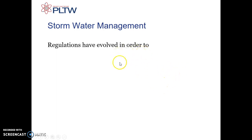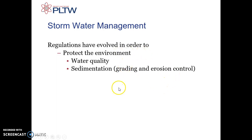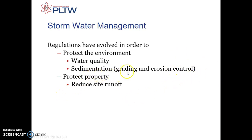Regulations have evolved to manage stormwater. It protects the environment by improving water quality and addressing sedimentation, which is erosion control. If a lot of water is running off your property and taking dirt and silt with it into streams or storm sewers, it can create problems and even change the path of a stream, so you need to keep that under control.